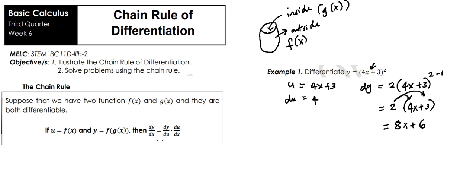We said here dy over du times du over dx. What does that mean? It just means once you get your dy, you're going to multiply it by your du. To get what we call dy over dx. So our dy is 8x plus 6 times du which is 4.